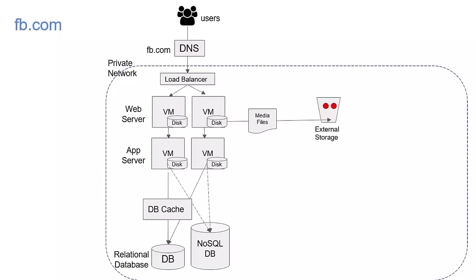EC2 and EBS solve your VM problem for deploying web servers and application servers. You can have auto scaling enabled for EC2s — if load increases, they scale horizontally automatically; if load decreases, they scale down. For relational databases there is RDS. For NoSQL databases there is DynamoDB. For database caches there is the ElastiCache service, which comes with Redis and Memcached engines. For load balancing, Amazon has ELB — Elastic Load Balancer — which distributes incoming traffic to multiple back-end EC2 machines.